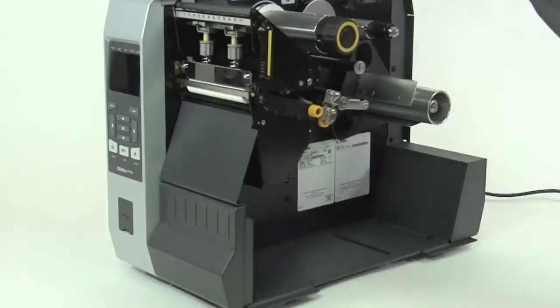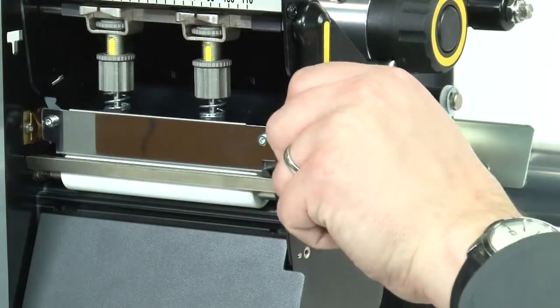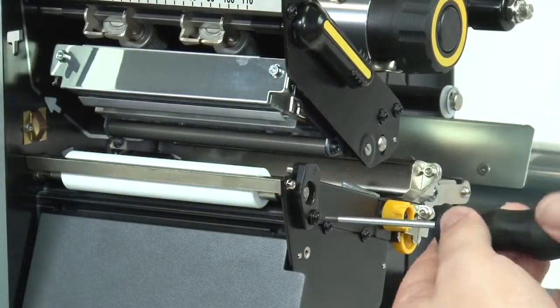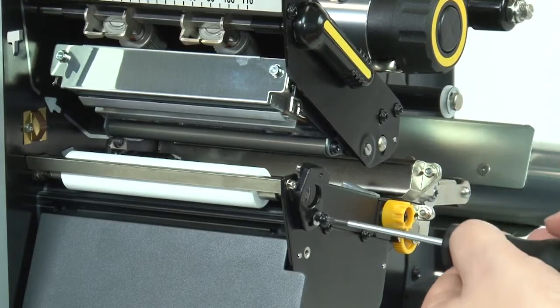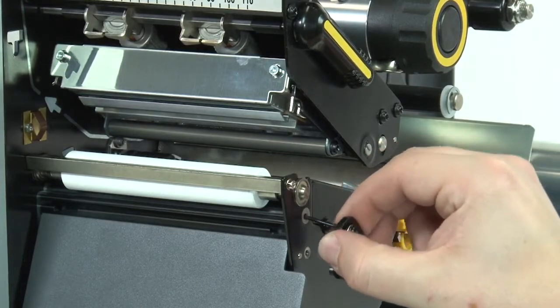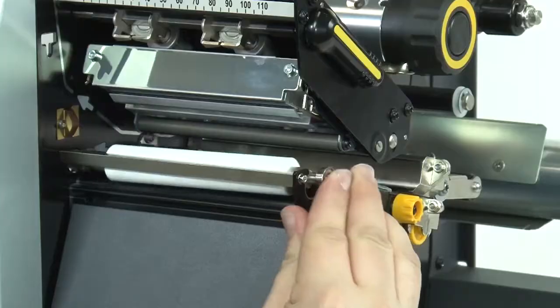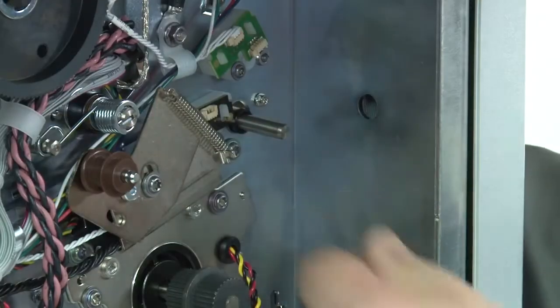Open the media door. Open the printhead. Loosen the screw holding the platen bearing retainer. Remove the upper platen roller from the printer.